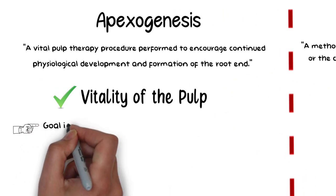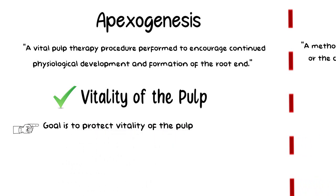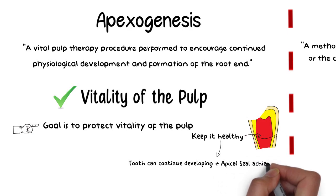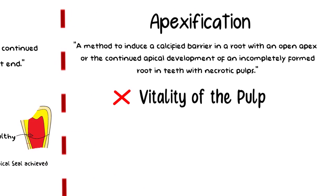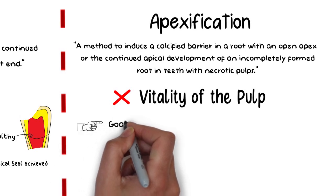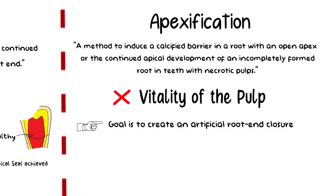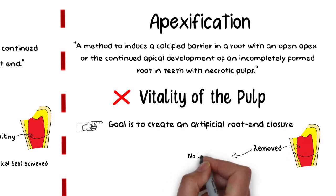The main objective of Apexogenesis is to maintain the vitality of the pulp after a pulpal exposure has occurred, usually due to trauma or some kind of mechanical exposure, so that the root can continue developing and apical closure can be achieved. While in Apexification, a calcified barrier is created at the root end in order to have an artificial root enclosure, so that an apical seal can be achieved, and hence the vitality of the pulp is lost.